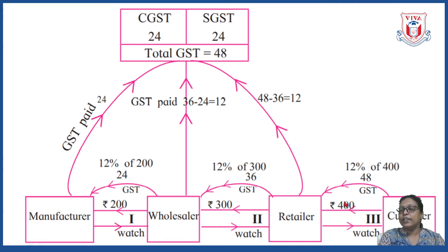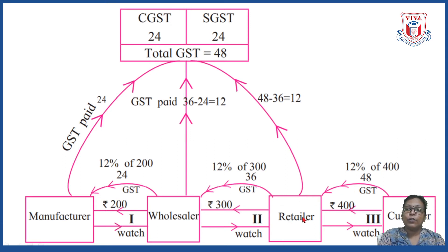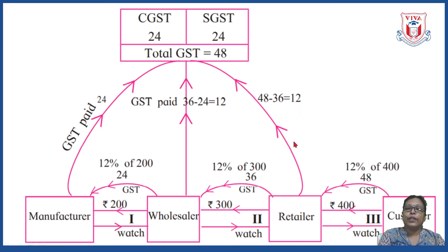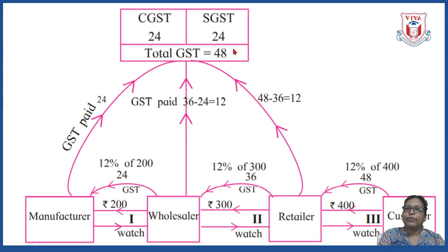The retailer sells the watch for rupees 400 to the customer. Tax is 12% of 400, which is rupees 48. The retailer considers rupees 36 as input tax credit and 48 as output tax, so actual GST payable by the retailer is 48 minus 36 equals rupees 12. Total GST is 24 plus 12 plus 12, which equals rupees 48.